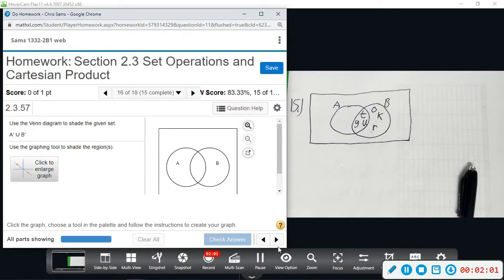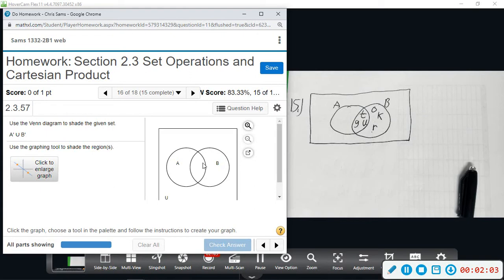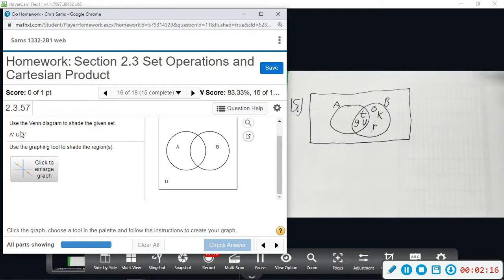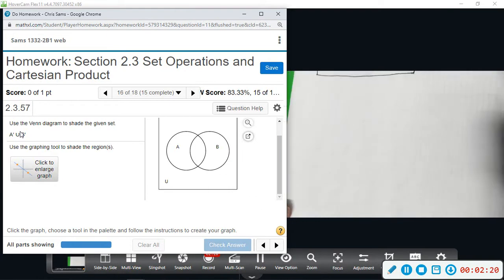This one, I can't see everything, I don't believe. It just says use the Venn diagram to shade the given set. So this is A complement union B complement. Okay, so let me show you guys some of these. It will be easier to do these when you have De Morgan's Laws.